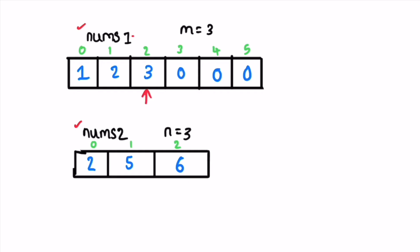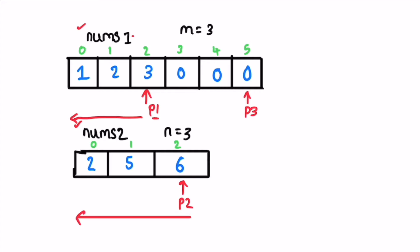The first pointer p1 will point at the last initialized position inside nums1. The second pointer p2 will point at the last initialized position inside nums2. The third pointer p3 will be placed at the end of nums1 and is used to insert elements. Both p1 and p2 iterate from right to left. Whenever they go out of bounds we initialize them with a dummy value so they can still be compared, handled with an if statement in code.